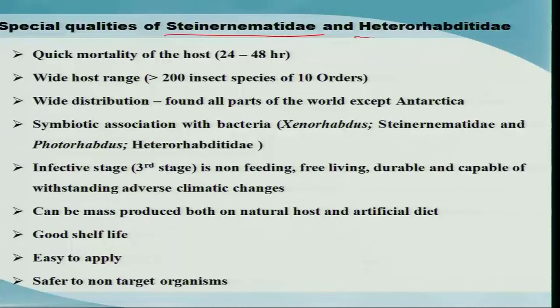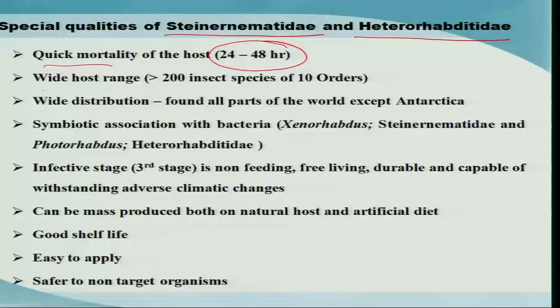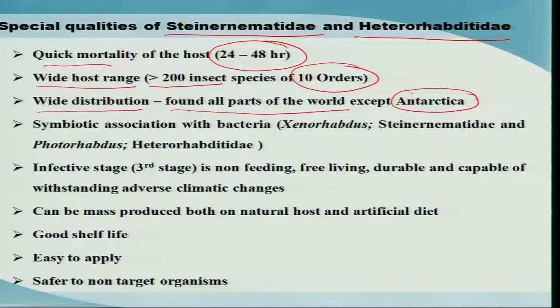Why these two nematode groups, Steinernematidae and Heterorhabditidae? It is because they have a tremendous potential of causing host mortality very quickly, within 24 to 48 hours. Bacteria, fungi, and viruses take around 4 to 7 days to kill the host, whereas these nematodes bring mortality very quickly once they enter the body. They also have a very wide host range — nearly more than 200 insect species of 10 orders are susceptible — and wide distribution found in all parts of the world except cold regions. Most importantly, they have a symbiotic association with bacteria: Xenorhabdus species in Steinernematidae and Photorhabdus species in Heterorhabditidae.